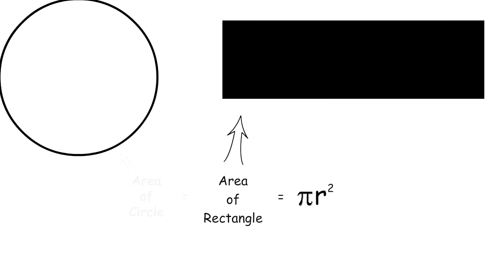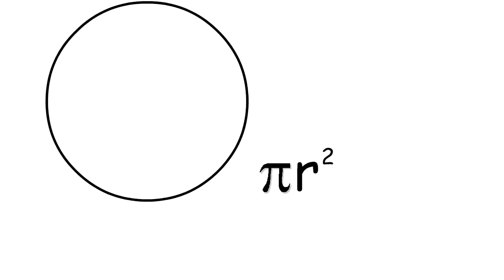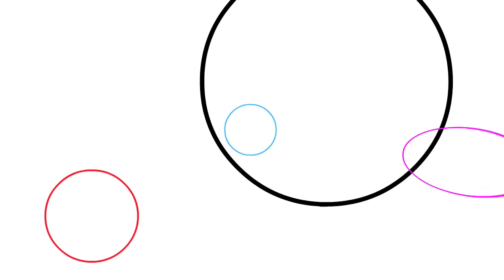which is equal to the area of the rectangle, which is equal to the area of the circle. So πr squared can be used to calculate the area of any size circle that exists.